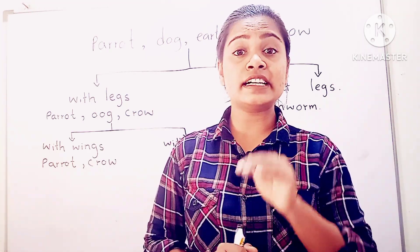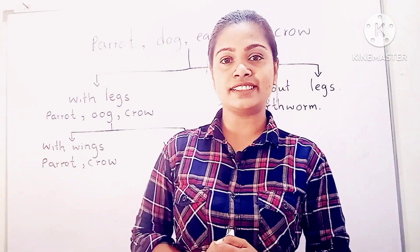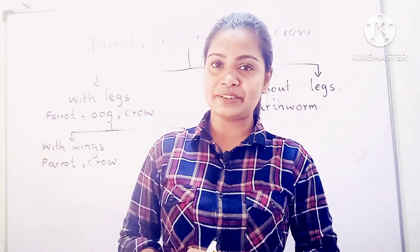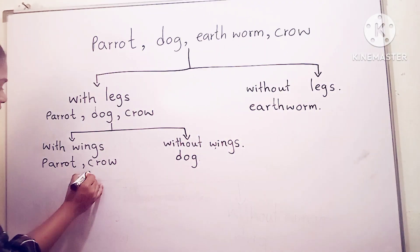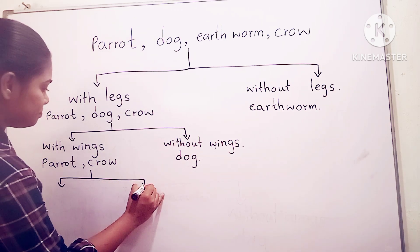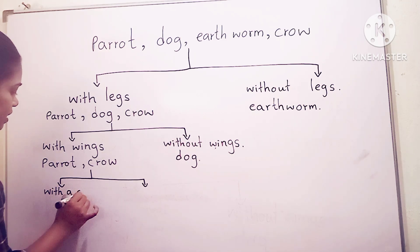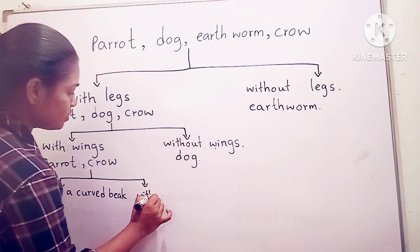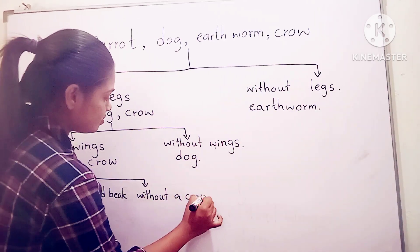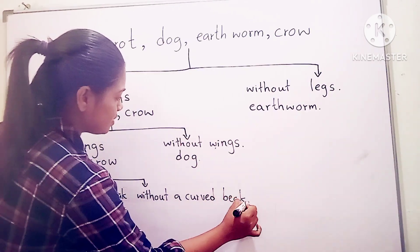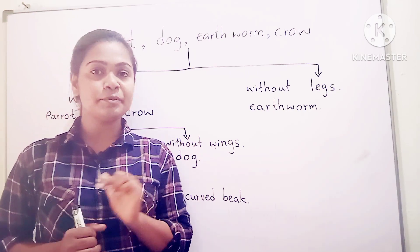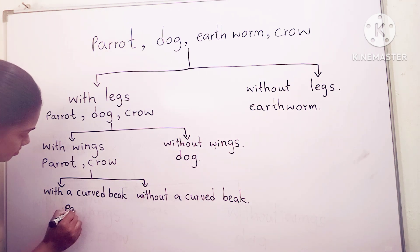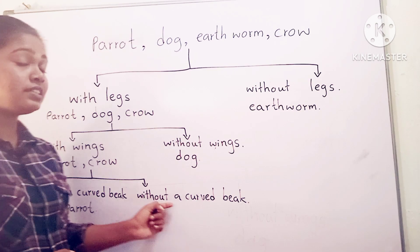You know, the parrot has a curved beak. Let's categorize the two birds as: with a curved beak and without a curved beak. The animal with a curved beak is the parrot. The animal without a curved beak is the crow.